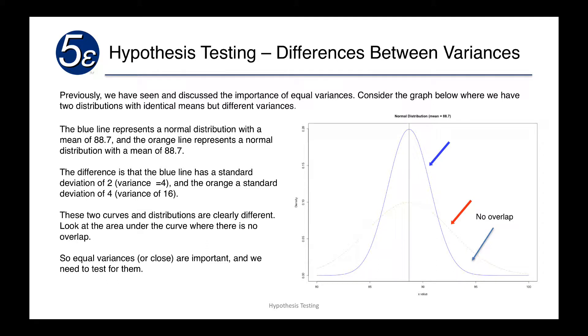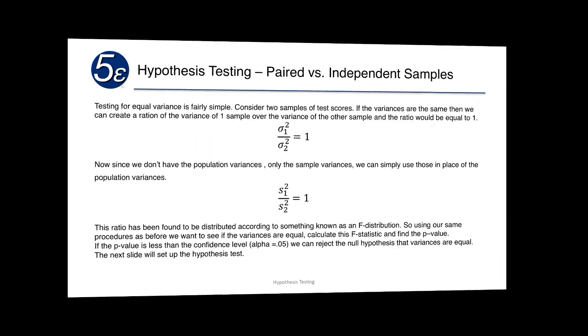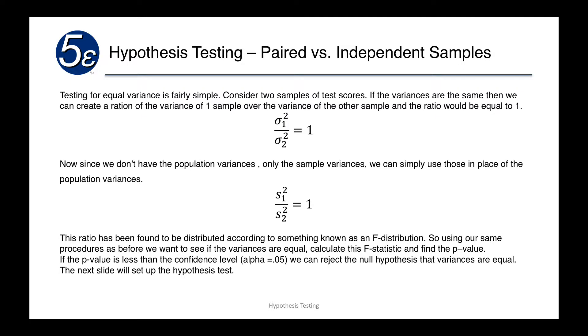You can see that the two shapes are very different. In fact, you can see that the probability of having a value in the area between the orange and the blue is fairly significant. So there's going to be a chance that we could be off if we just did normal tests and treated them as though they were the same population when the two curves show that they're very different. So equal variances, or at least close to it, are very important and we need to test for them.